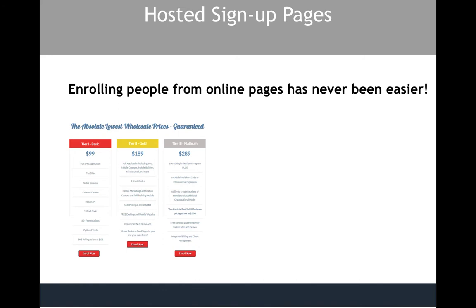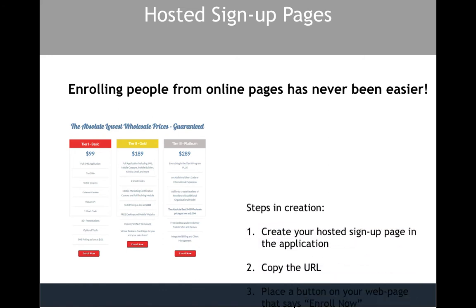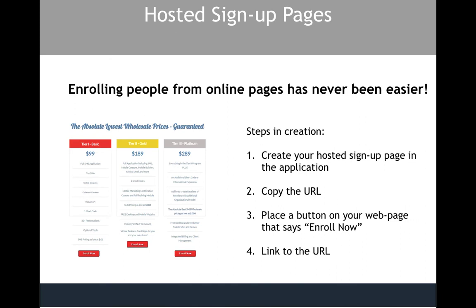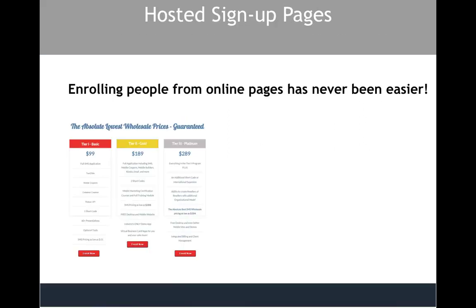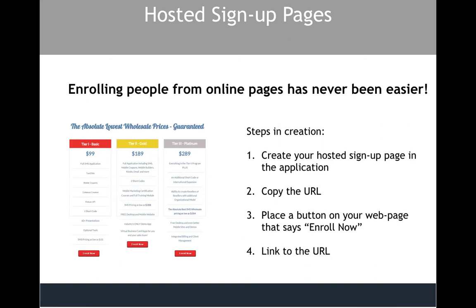It's never been easier to get people to sign up because now you can get people to sign up right from your website. You can create plans right on your website for $99 a month, $189 a month, whatever package you want. And as soon as they click the link at the bottom where it says 'Enroll Now,' it takes them right to a page where they can sign up and put in their credit card information. That money goes directly into your account and their account is automatically created in our system.